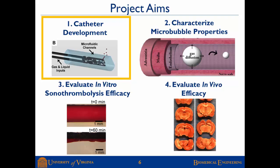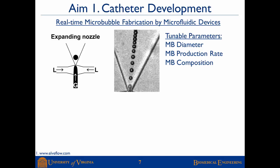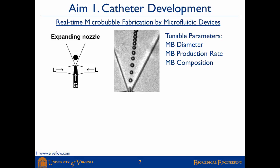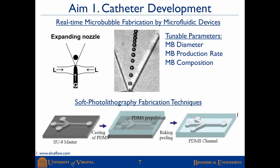For aim one, the catheter we designed has a microfluidic device placed on its tip — a flow-focusing microfluidic device in which two liquid channels pinch a gas channel to produce microbubbles. This is attractive because by changing the liquid or gas pressure, we can change the microbubble diameter, the production rate, and the composition by changing the gas or liquid phase.